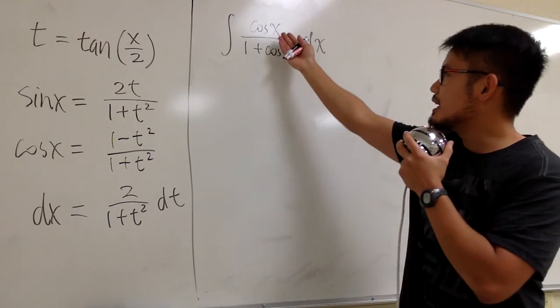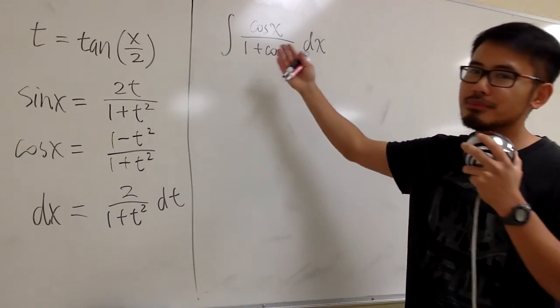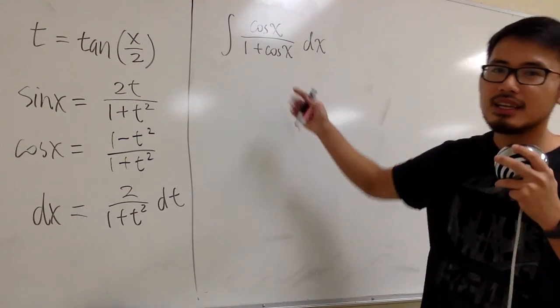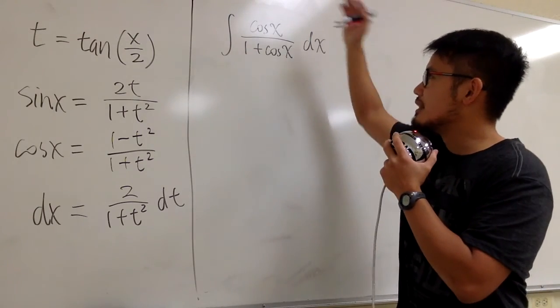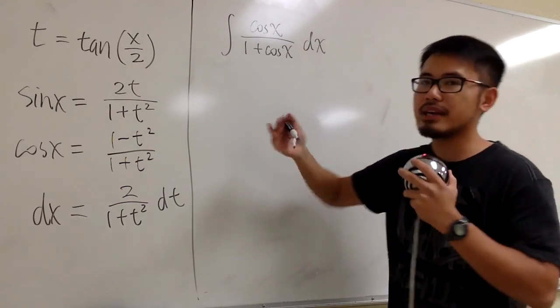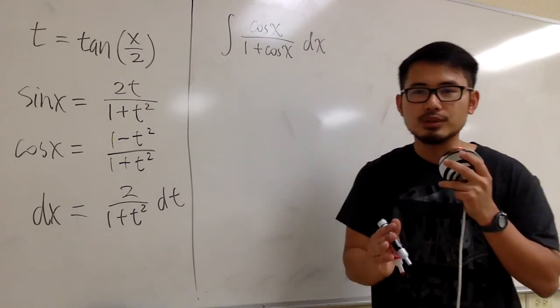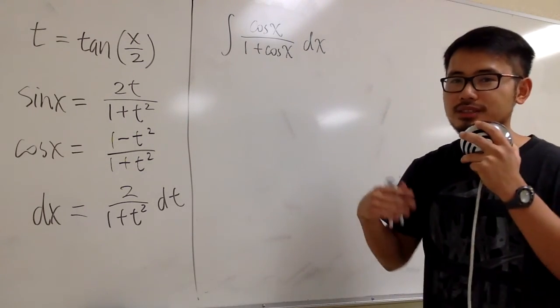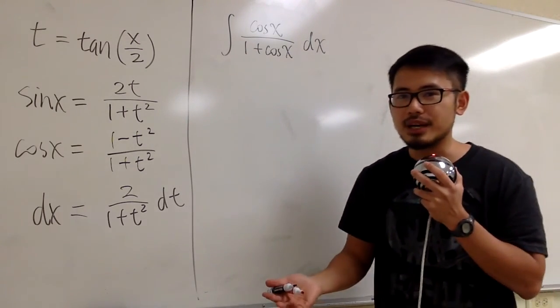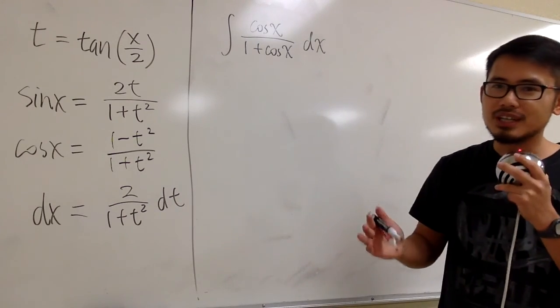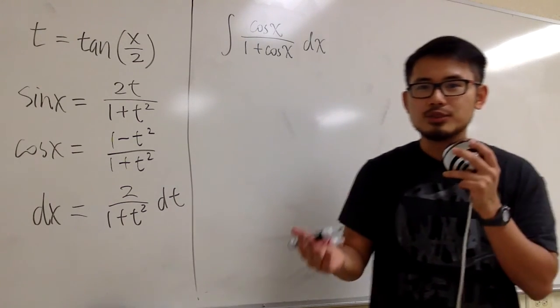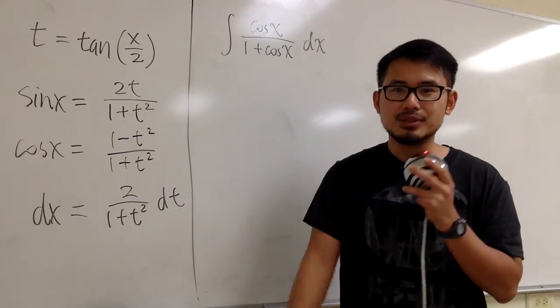Let's see how to integrate cos(x) over (1 + cos(x)). Even though we can just multiply the top and bottom by (1 - cos(x)) and work out some trig identities, I wanted to show you guys the Weierstrass substitution.